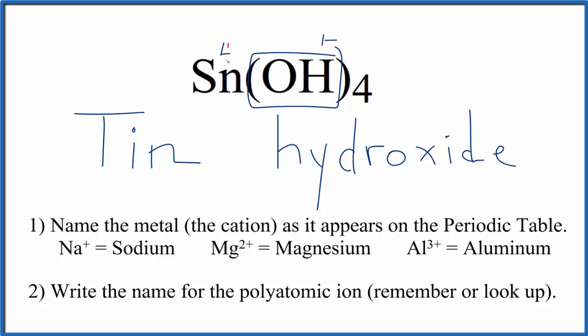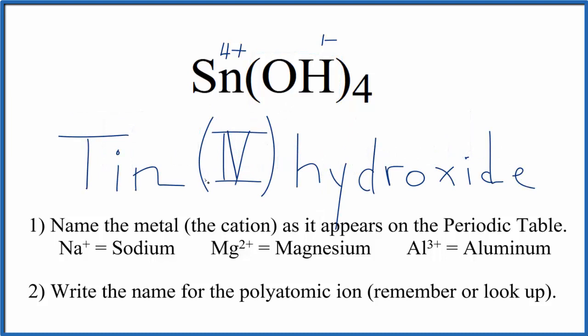So the tin has to be 4 plus for the charge to balance out, give us a net charge of 0. So we're going to write a Roman numeral 4 and then put parentheses around it. And the name for Sn(OH)4 is tin(IV) hydroxide.